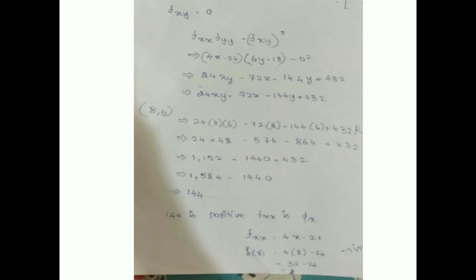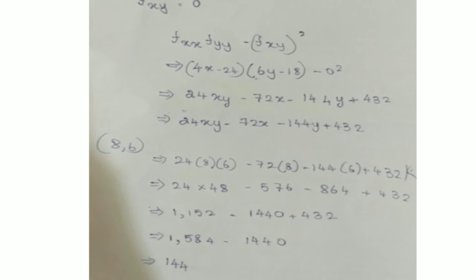To determine the nature, compute f_xx · f_yy - (f_xy)². Substituting: (6x - 24)(6y - 18) - 0². Expanding: 36xy - 108x - 144y + 432 - 0, which simplifies to 36xy - 108x - 144y + 432.